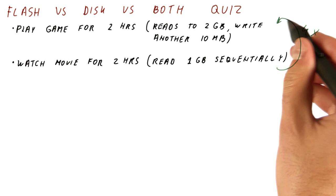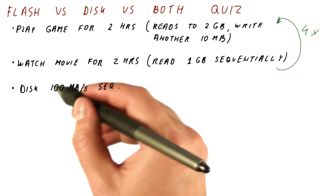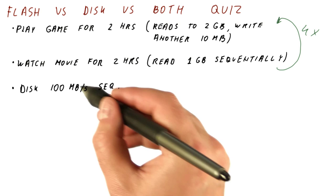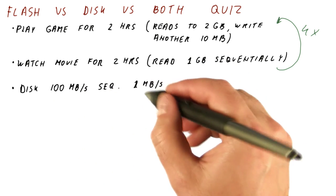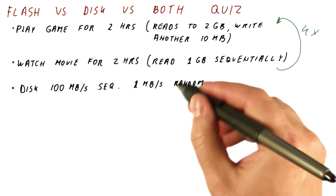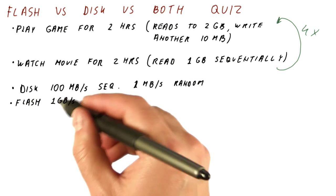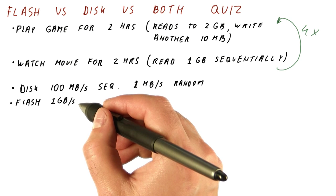If we have a disk that can read 100 megabytes a second if we read sequentially, and read or write one megabyte per second if we do it randomly, and if we have flash that can access one gigabyte per second either way.